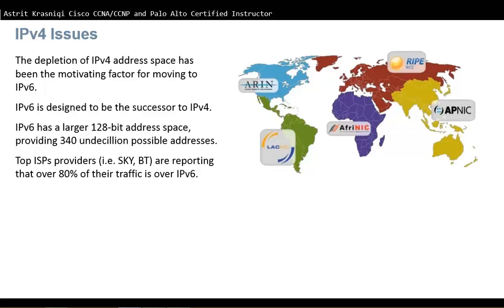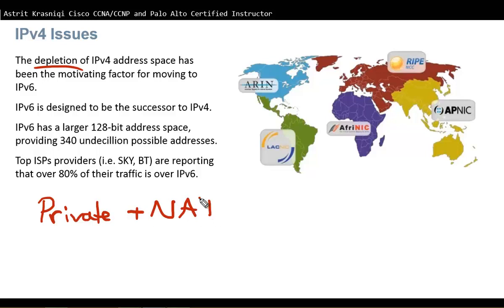The depletion of IPv4 address space has been the motivating factor for moving to IPv6. IPv6 is designed to be the successor to IPv4. The only reason this depletion has slowed down is because we use private addresses together with NAT, which has slowed the depletion — that's why in the year 2020 we still have IPv4. Without NAT and private addresses, we would have moved to IPv6 around the year 2000.